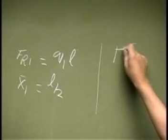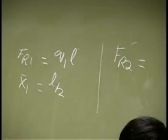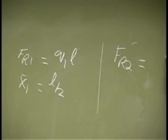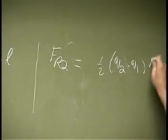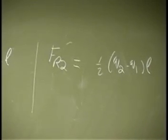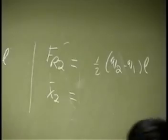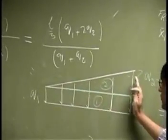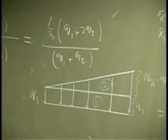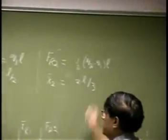Then, you have FR2. You are looking at this and that is half Q2 minus Q1 times L. So, location is X2 bar and this is the triangle. So, you are looking at from the base, from the side. So, this will be 2L over 3.